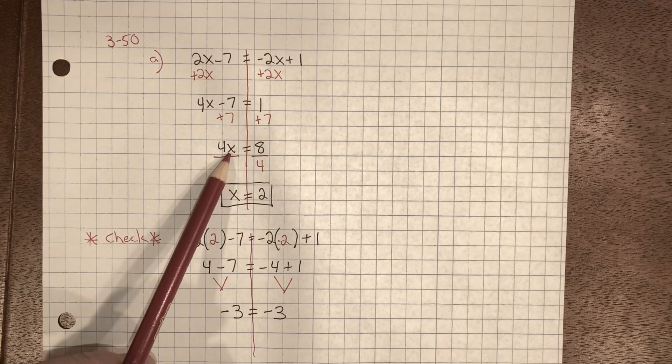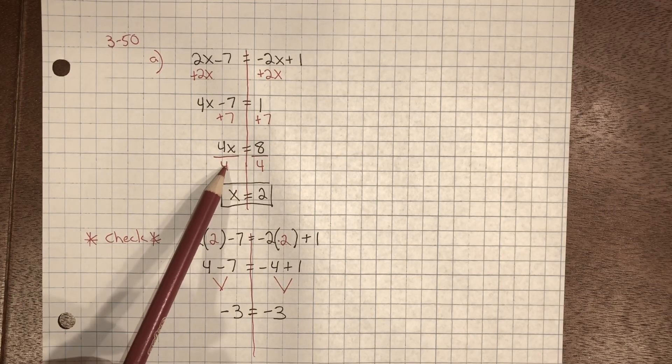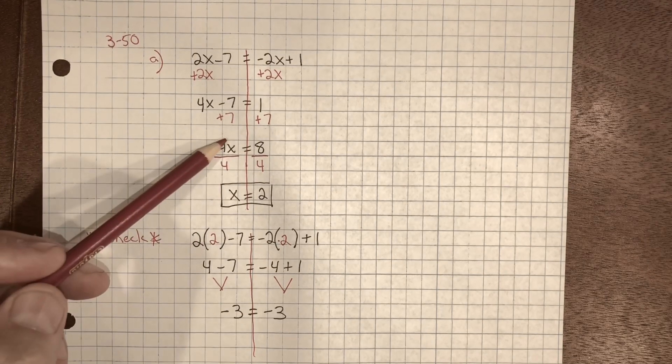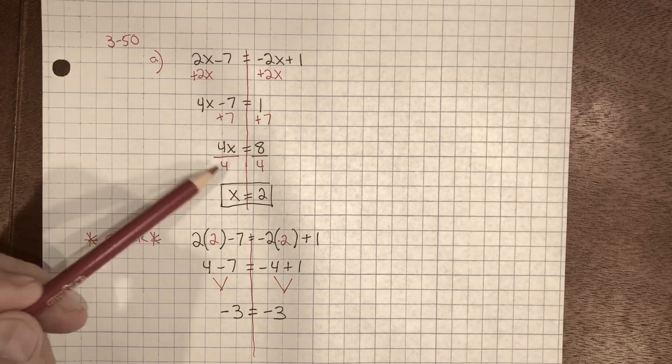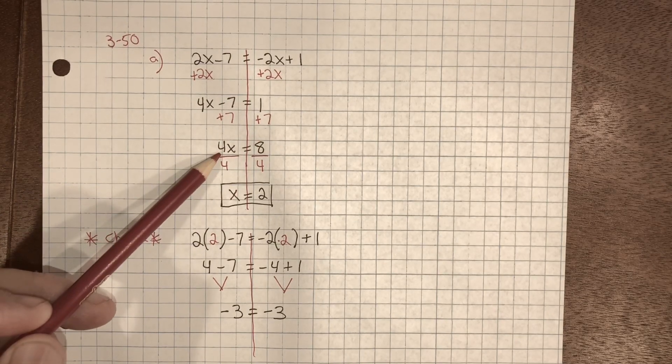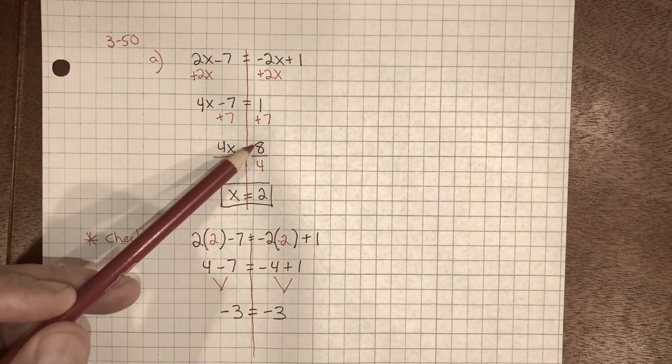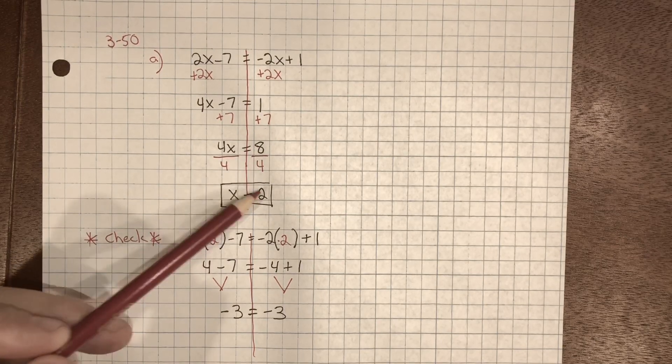Now we have 4x equals 8. Inverse property of multiplication is division. So we're going to divide both sides by 4. This gives us the giant 1, the identity property of multiplication. 1 multiplied by x equals x. 8 divided by 4 equals 2.